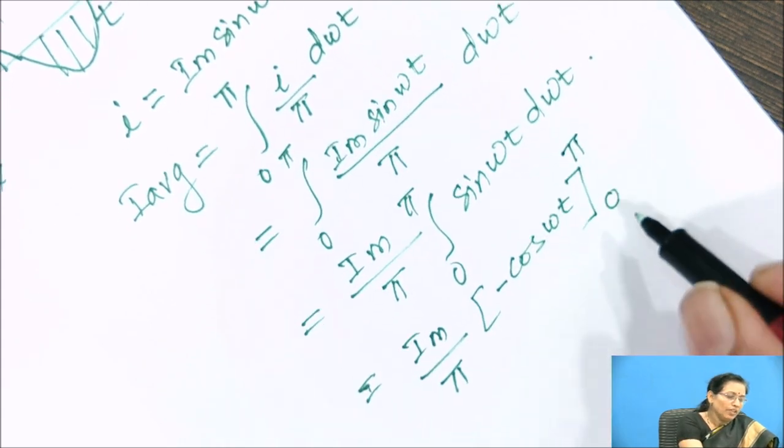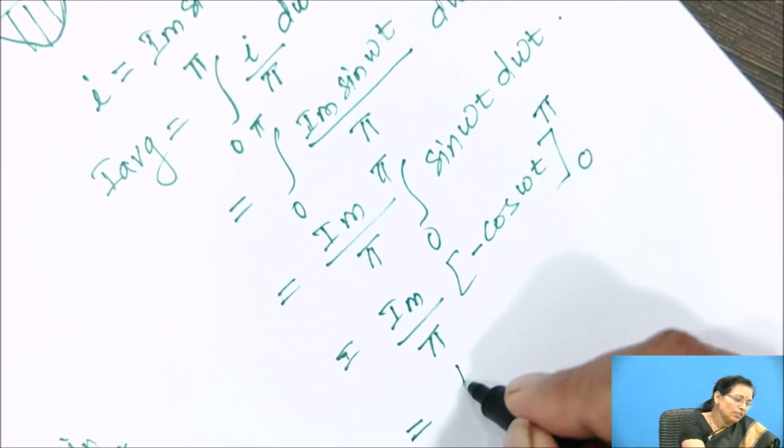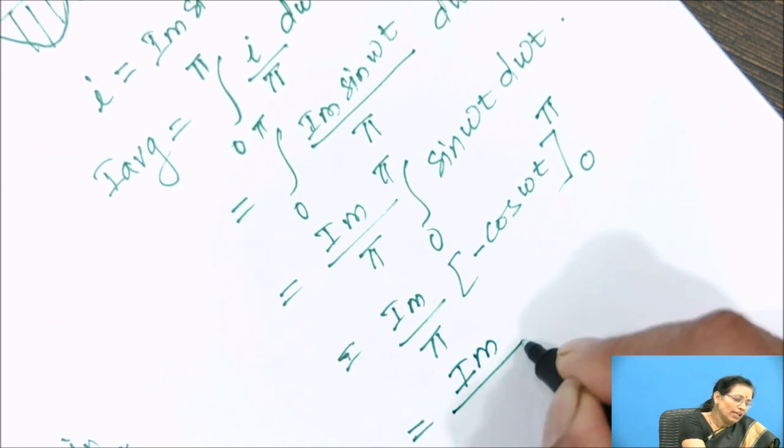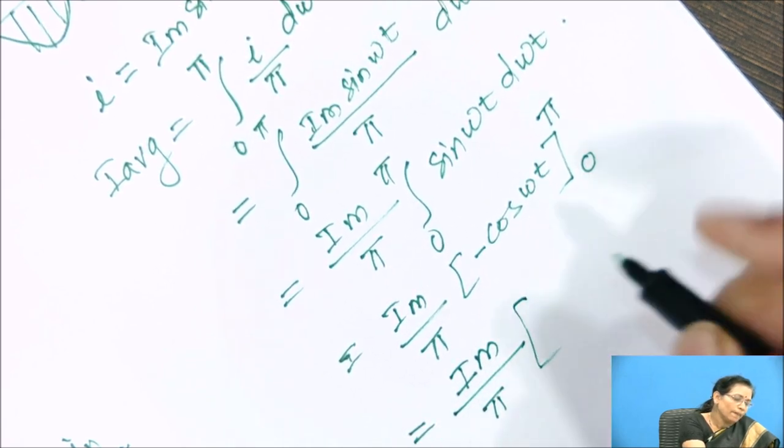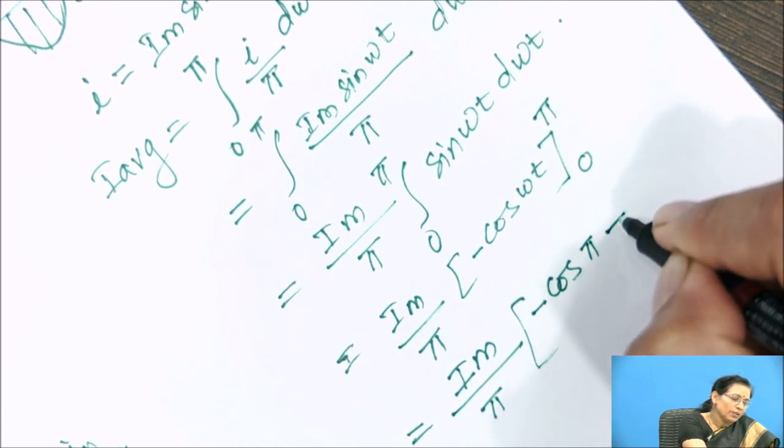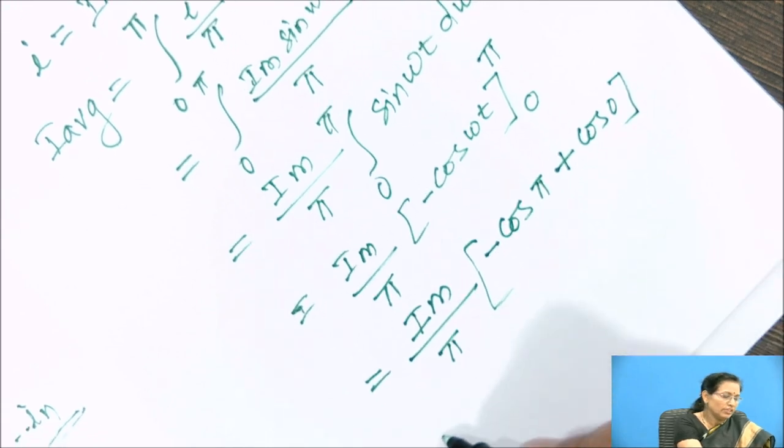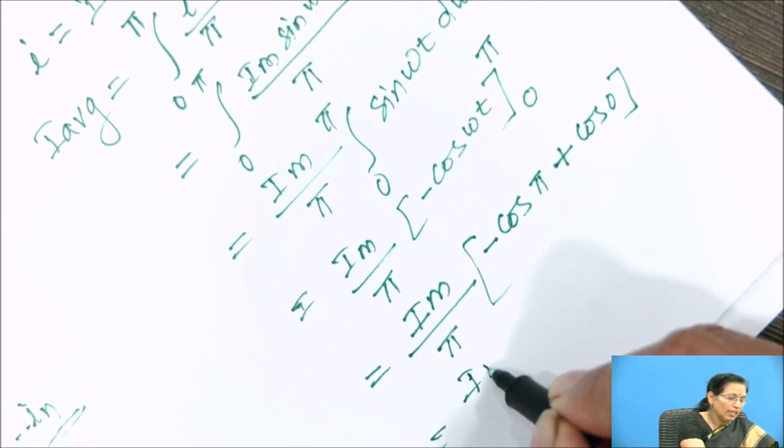If we put the limit for this equation, we will get Im by pi, minus cos pi plus cos 0.